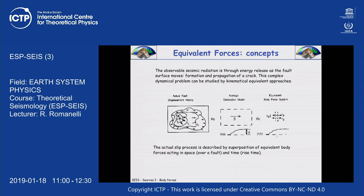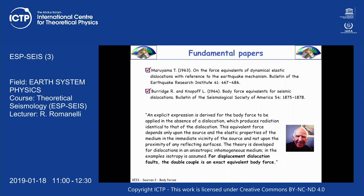That's the logic, and that's the map of what we should do today. The road is not easy. Everything is actually related by a seminal paper published in 1964 by Burridge and Knopoff. The title is 'Body force equivalence for seismic dislocations.' I put in bold that for displacement dislocation — what we are going to call a shear dislocation — the double couple is an exact equivalent body force. That's the key statement.